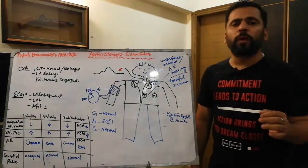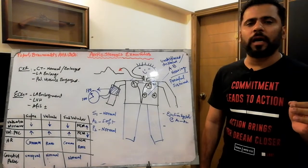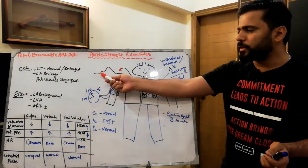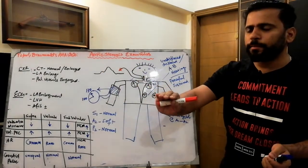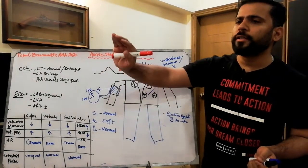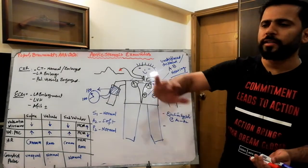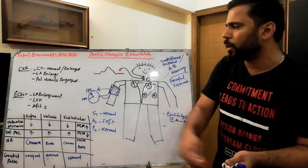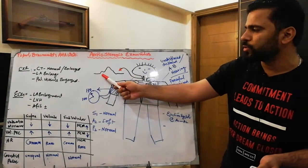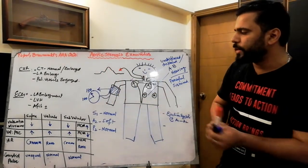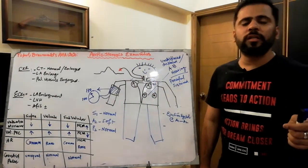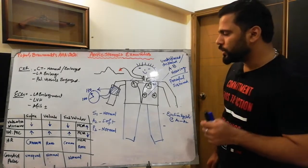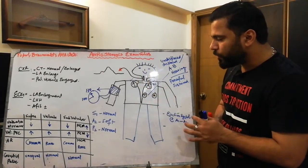You have to auscultate and check the carotid pulse, because the carotid pulse is the best surrogate of central pulsation. In the carotid you will find the parvus et tardus pulse — a slow-rising pulse. There will be a slow rise and then a drop, giving a slow-rising character. This is a clinical feature of aortic stenosis.